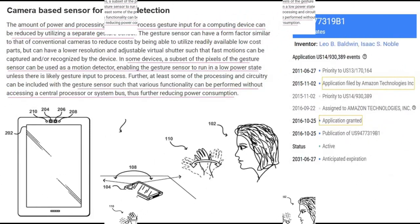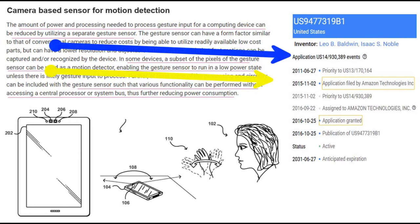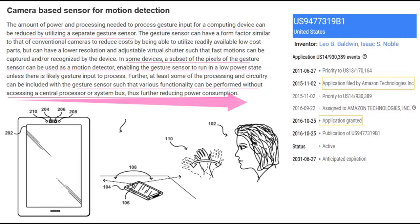Details are as follows. 1. Lower resolution and adjustable virtual shutter to capture fast motion. 2. Capturing subset of pixels to run gesture sensor in low power. 3. Less use of central processor or system bus.